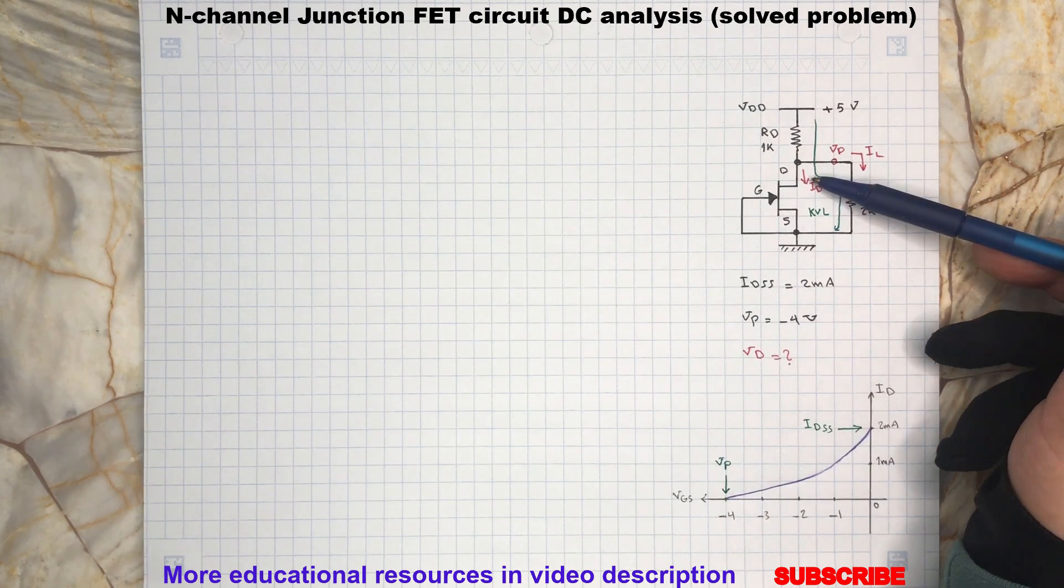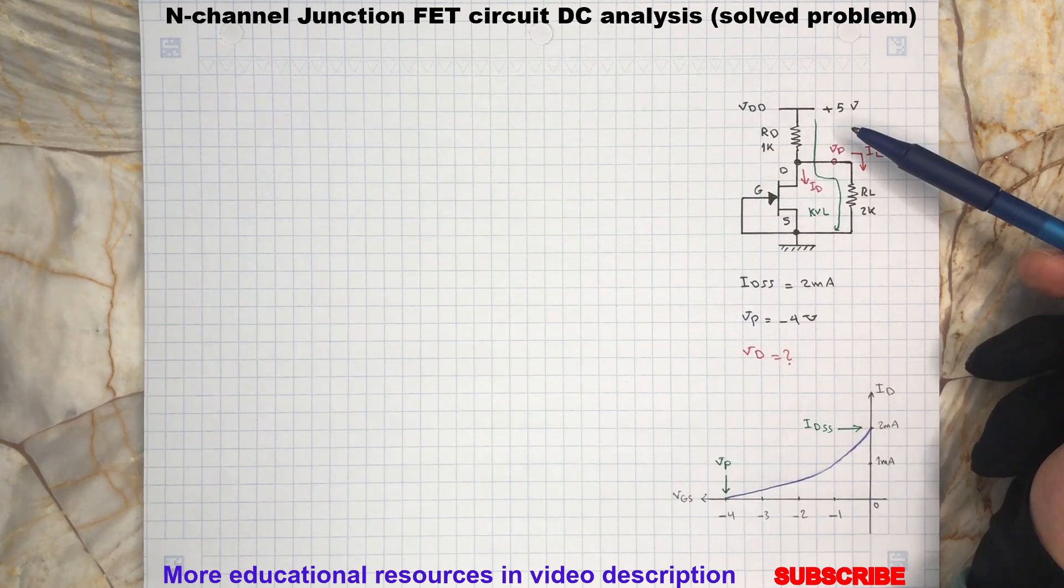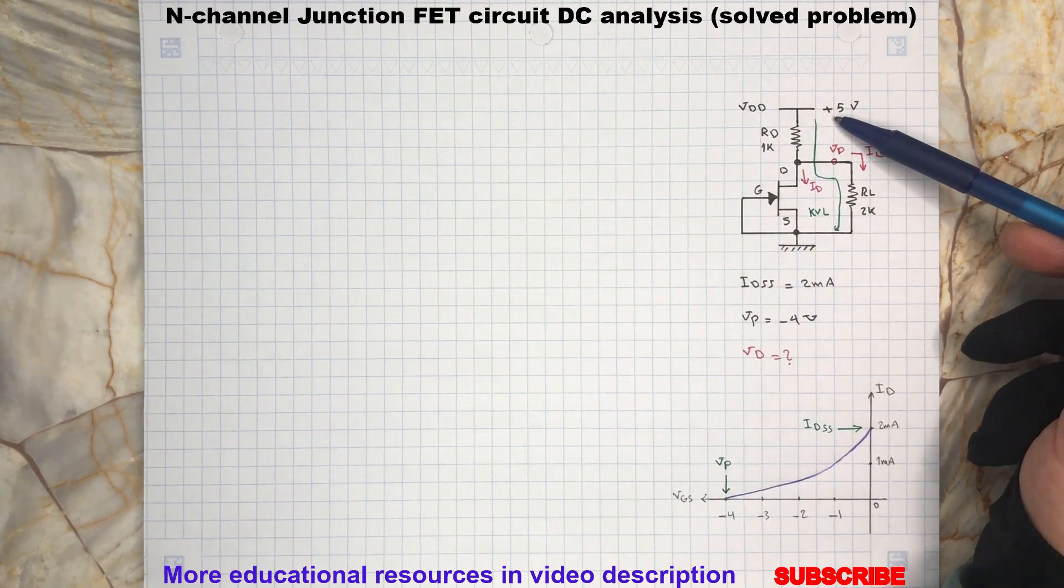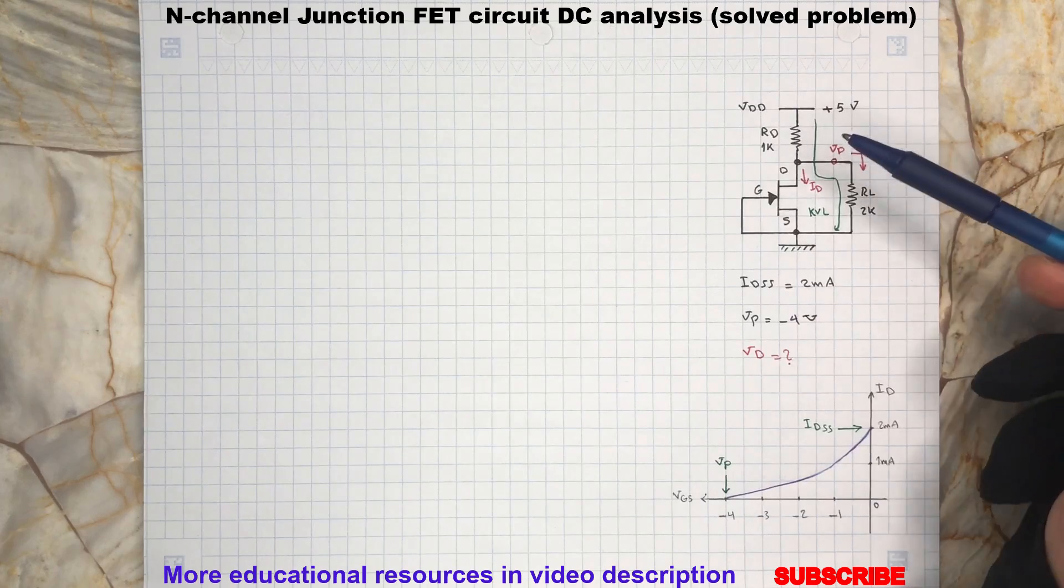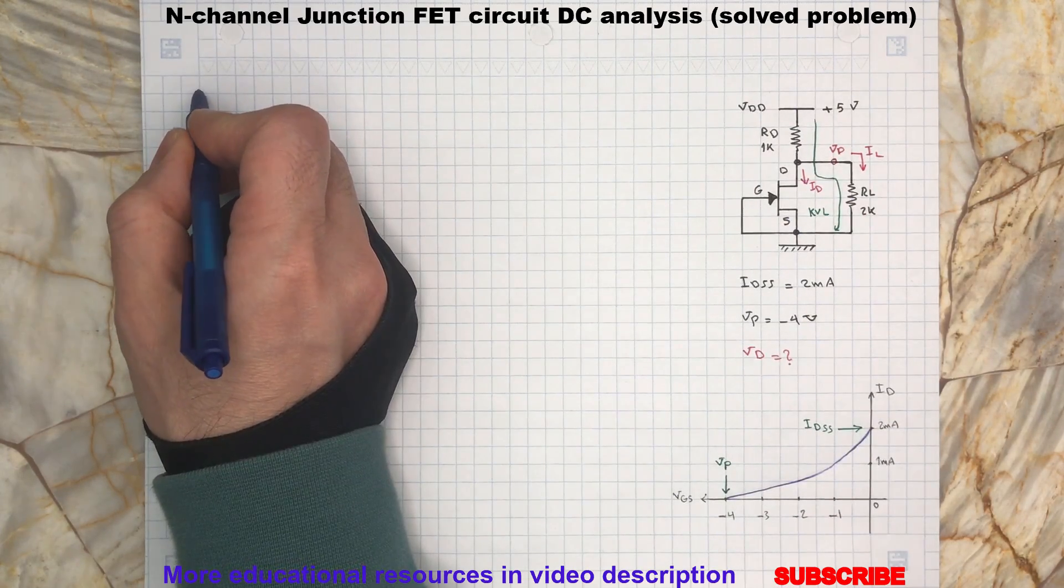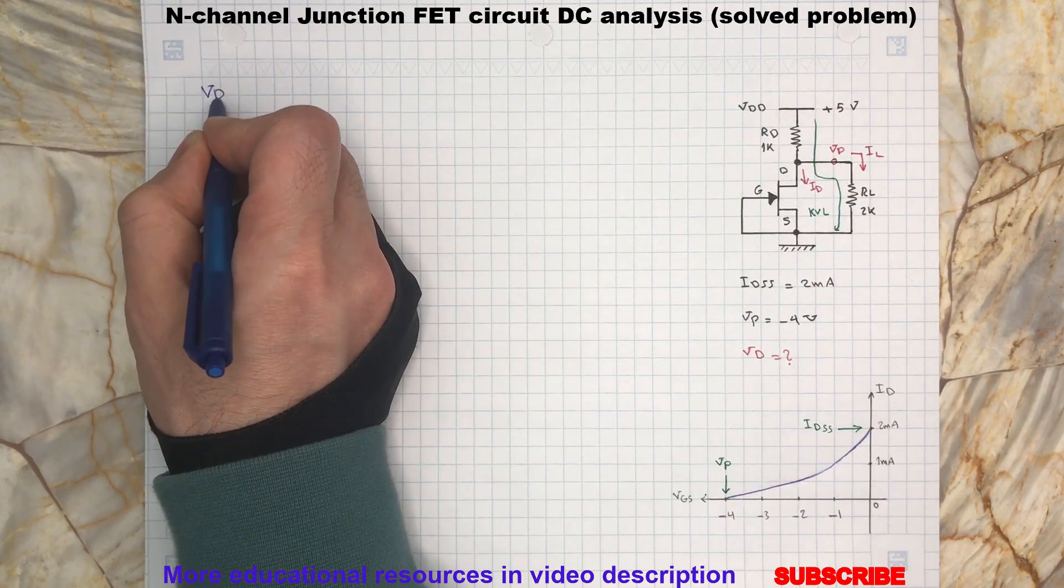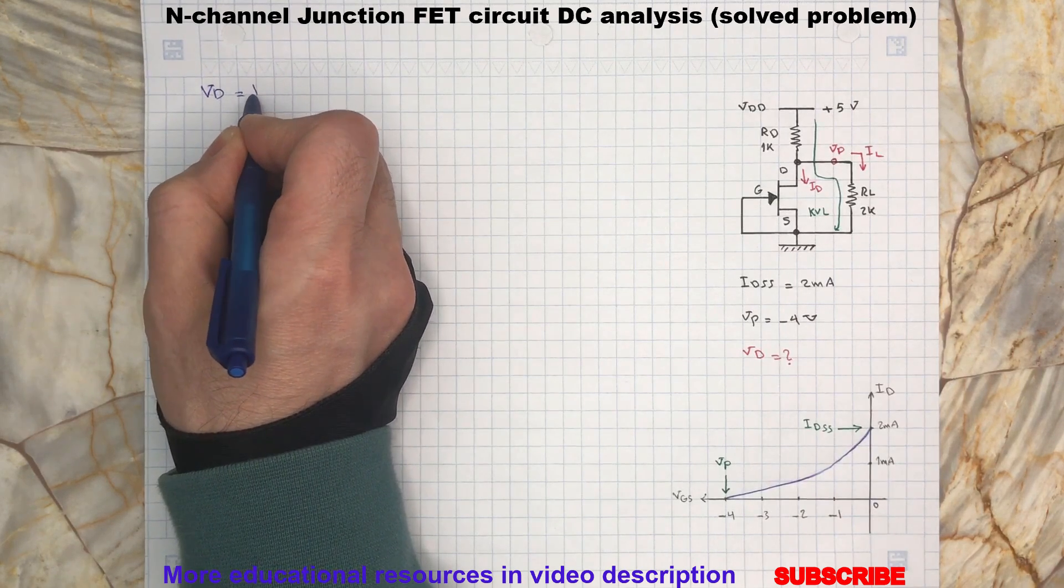We can write Kirchhoff's voltage law, KVL, from supply voltage VDD, which is 5 volts, to ground, and it will help to determine IL. Here's how: we need to find VD, and it